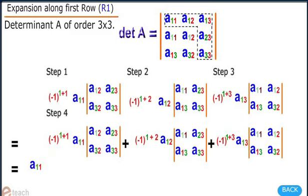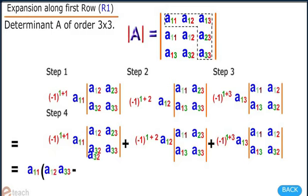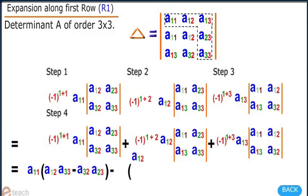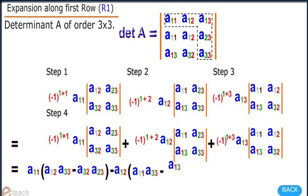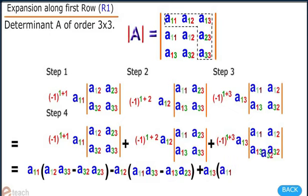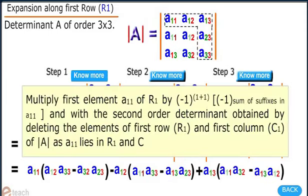After the expansion, we get: A11 into (A22·A33 minus A32·A23) minus A12 into (A21·A33 minus A31·A23) plus A13 into (A21·A32 minus A31·A22). Let us know more about step 1.